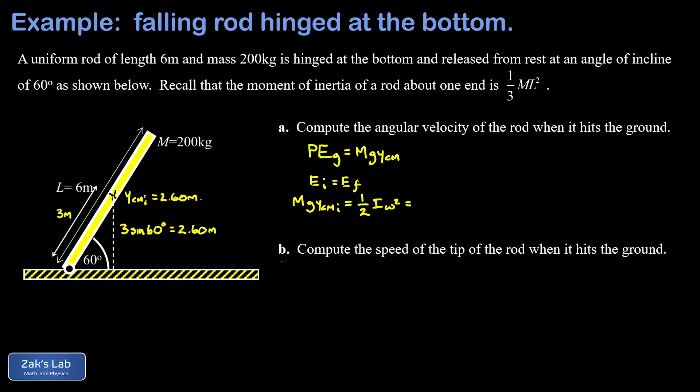We were given a hint in the problem that the moment of inertia of a rod is one-third ML squared when the rod is rotating about one of its ends. So we have one half times one-third times ML squared times omega squared. Note that the mass of the rod is irrelevant; that cancels out here.